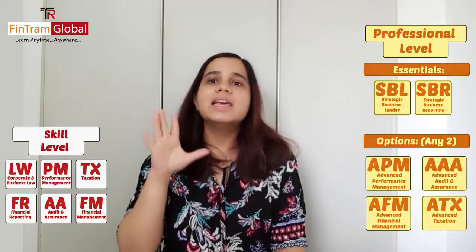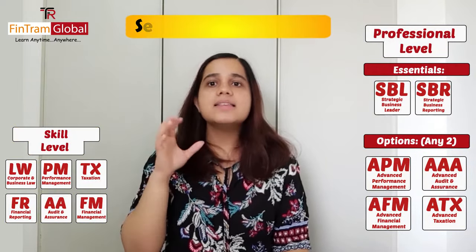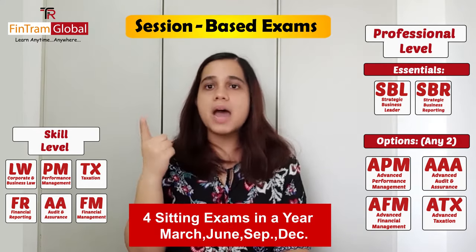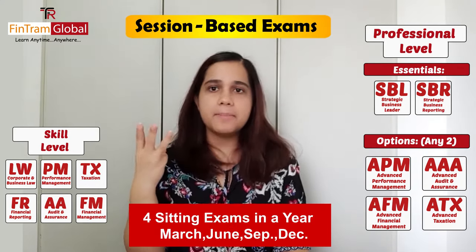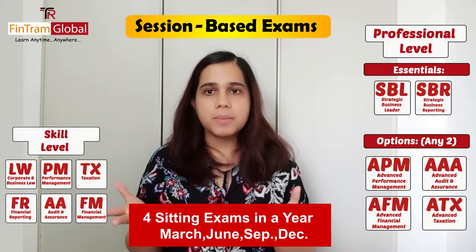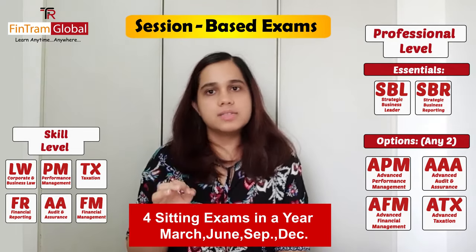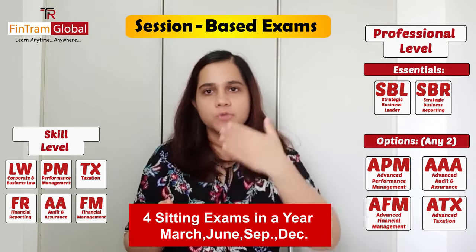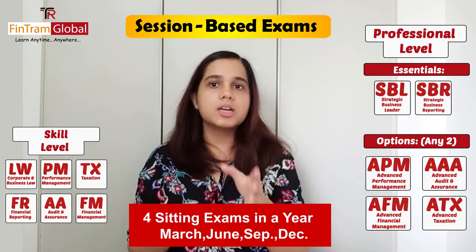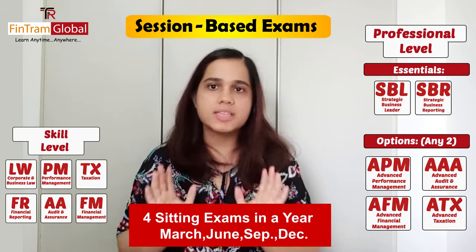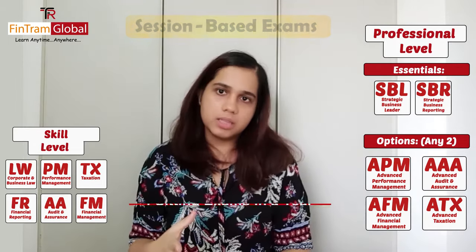After the knowledge level, the skill level and professional level papers have fixed sittings. There are 4 sittings per year: March, June, September, and December. You can choose any sitting or multiple sittings. You need to book your exam in advance before the cut-off date set by ACCA. After that deadline, you cannot book, so make sure to register within that time period.